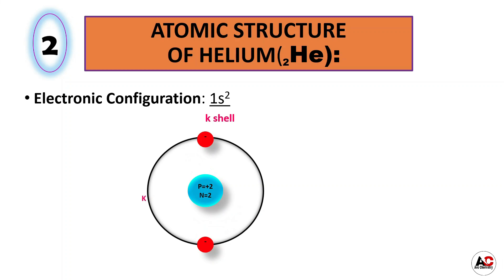In previous lectures on electronic configuration, we already discussed how to calculate the number of neutrons. When we subtract the atomic number from the mass number, we get the number of neutrons. So in this lecture we will not calculate neutrons for every element — we will only focus on the atomic structures. You can watch my previous lectures and calculate it yourself using the mass number.